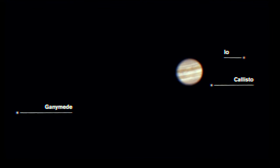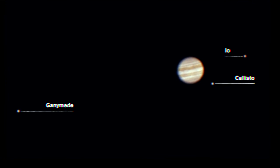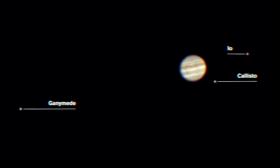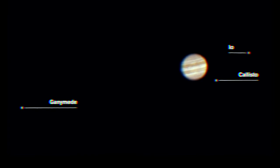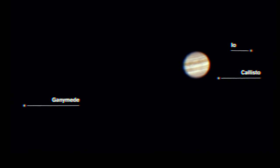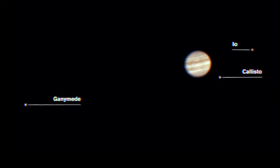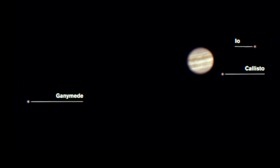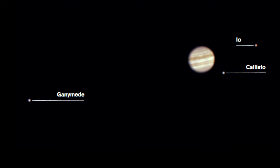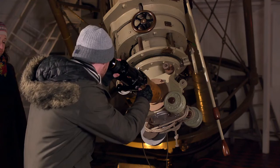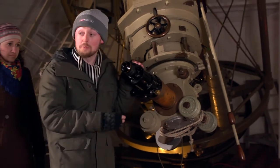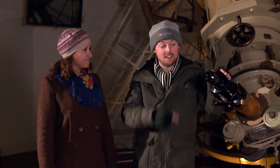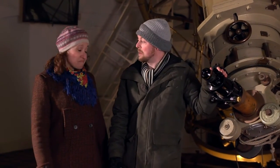I can see all that detail and also I'm spotting three of the four Galilean moons — that's quite spectacular. I can see Io, Ganymede, and Callisto. It must mean that Europa is the odd one out, behind on the other side of the planet.